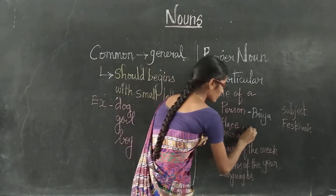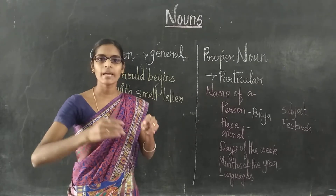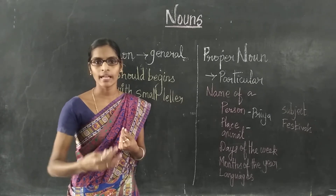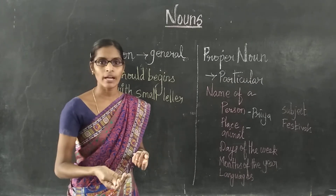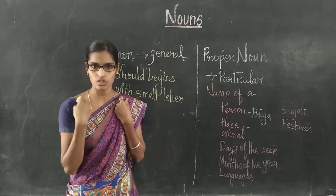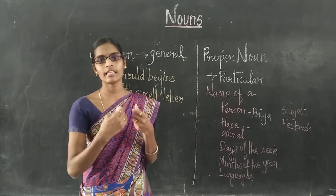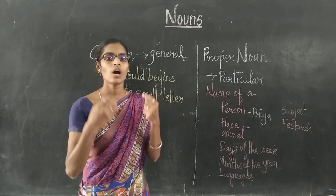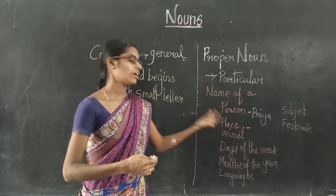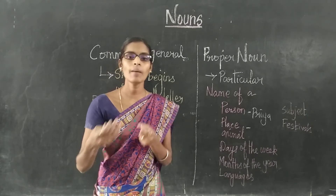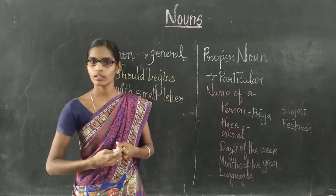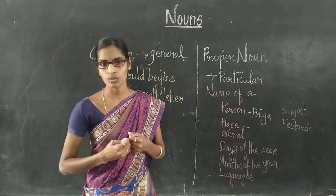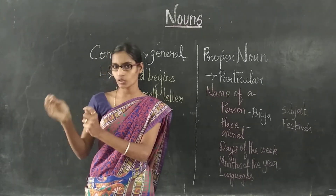Then place — not all place names are the same; each place has its very own name. For example, our town name is Senji — only our town name is Senji. Our state name is Tamil Nadu, and our district name is Villapuram. So a particular place name is called a Proper Noun. For example, 'school' is a Common Noun, but 'Sarada School' is a Proper Noun — 'school' refers to all schools, but 'Sarada School' refers only to our school. This is the difference between Common and Proper Noun.